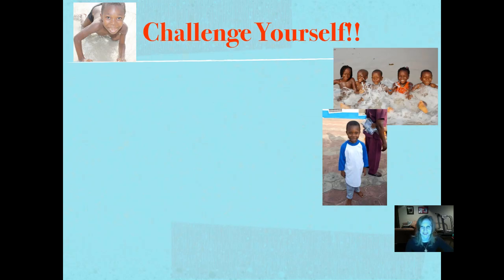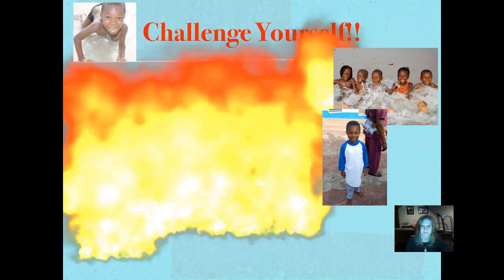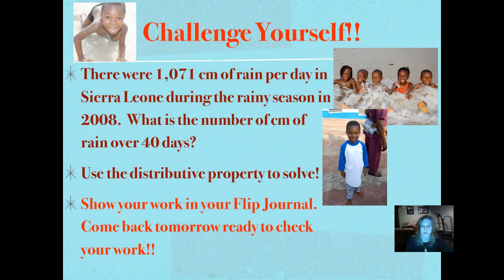It's time to challenge yourself. Those are pictures of Abdul at the beach. There were 1,071 centimeters of rain per day in Sierra Leone during the rainy season in 2008. What is the number of centimeters of rain over 40 days? Use the distributive property to solve and show your work in your flip journal. Come back tomorrow ready to check your work.